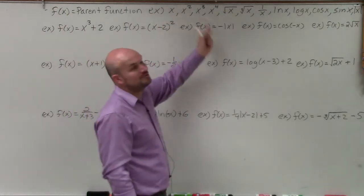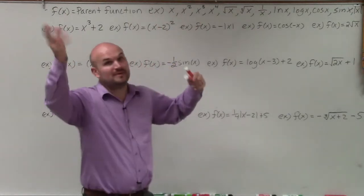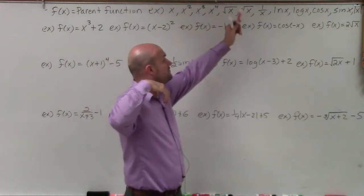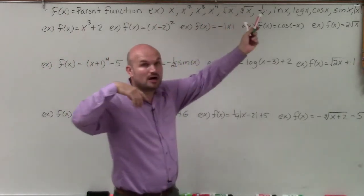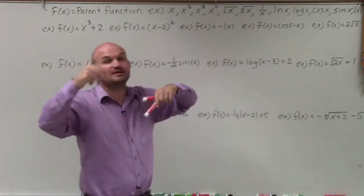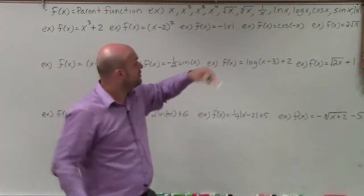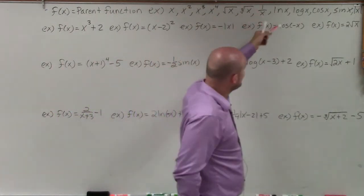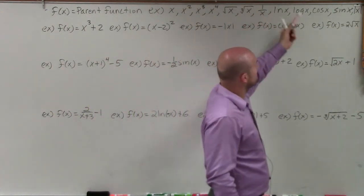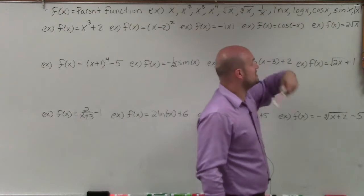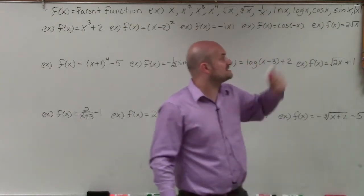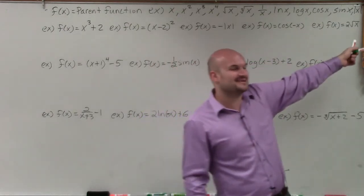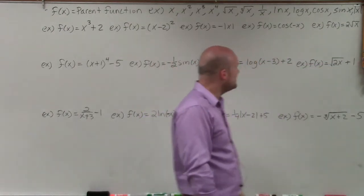x, x squared, x cubed, x to the fourth — you could keep going up with higher powers. Square root of x, cube root of x — you could keep going up with higher indexes. 1 over x, ln of x, log of x, cosine of x, sine of x, and absolute value of x.